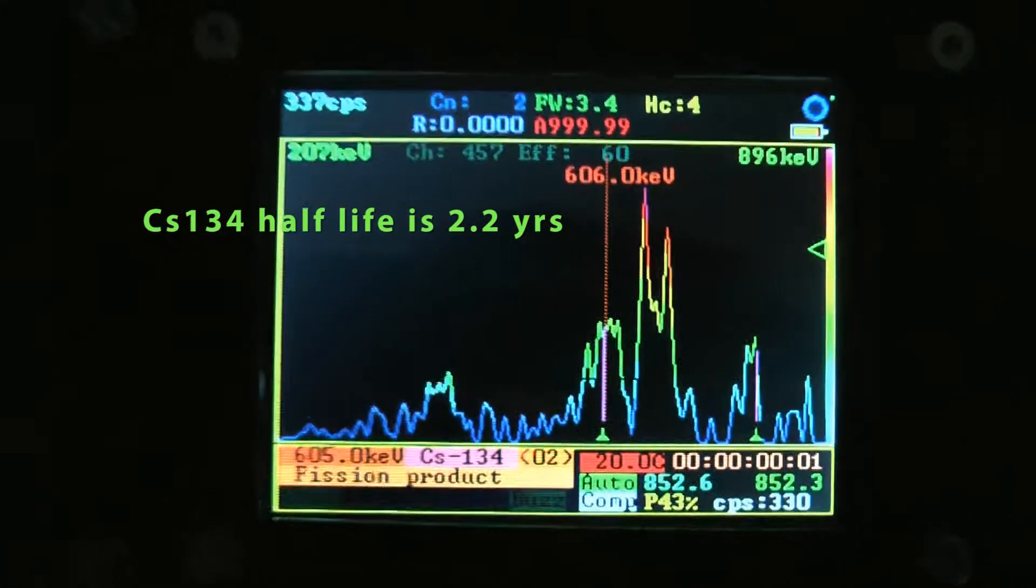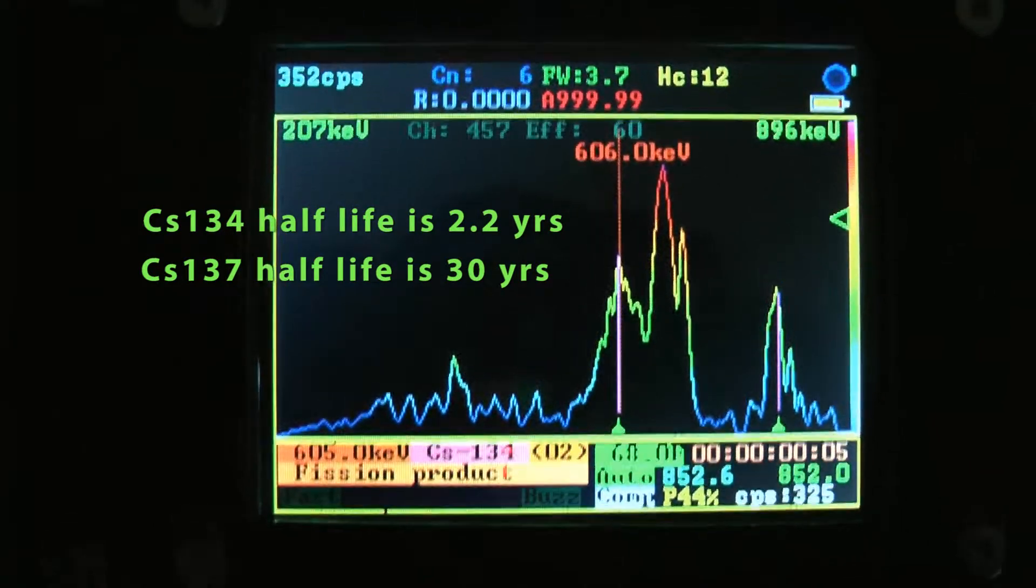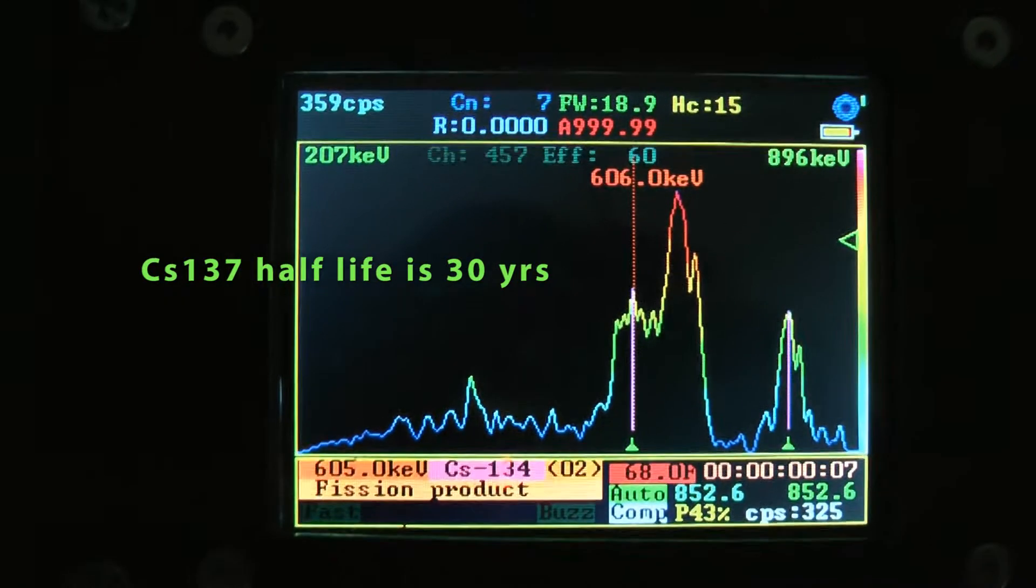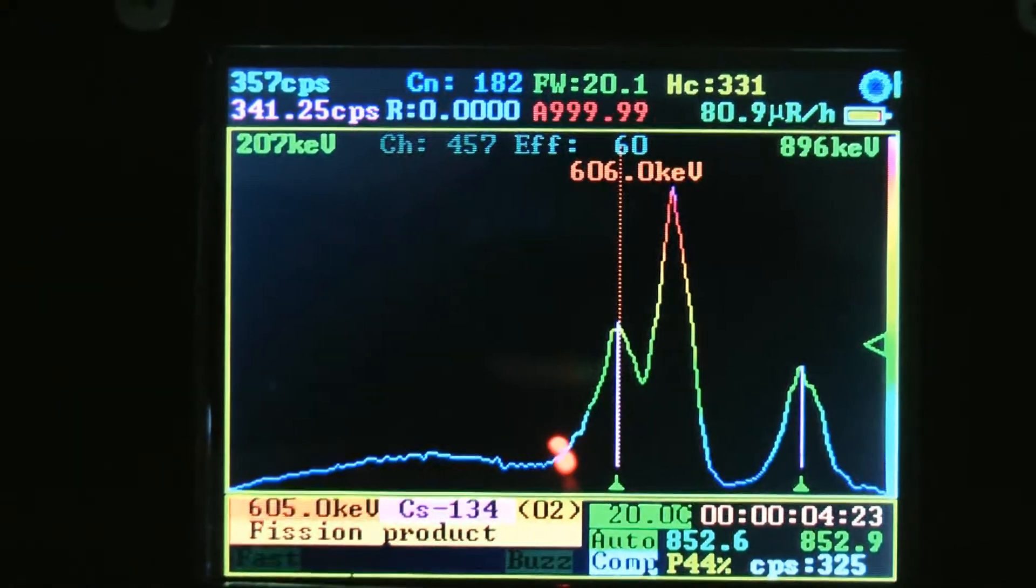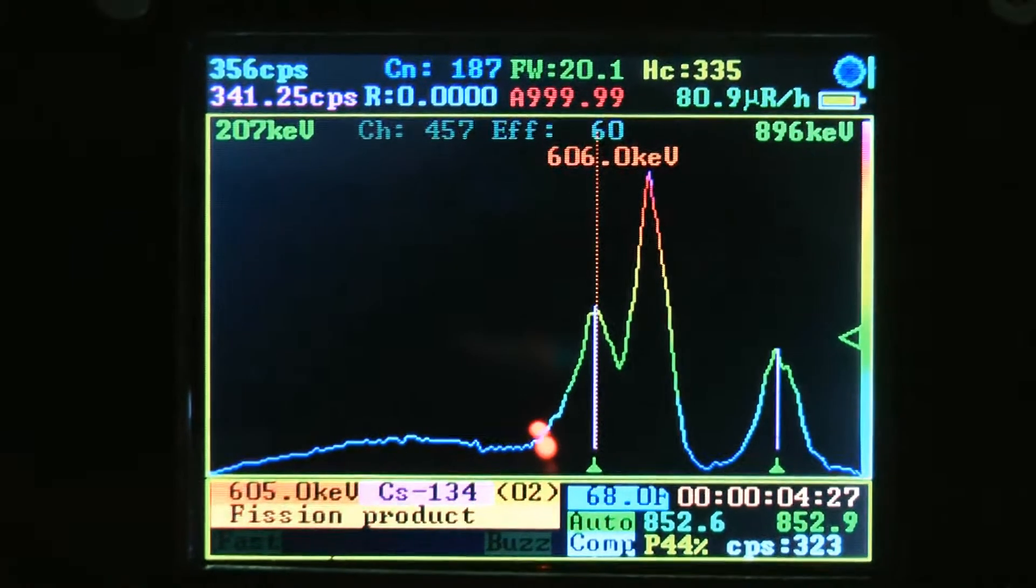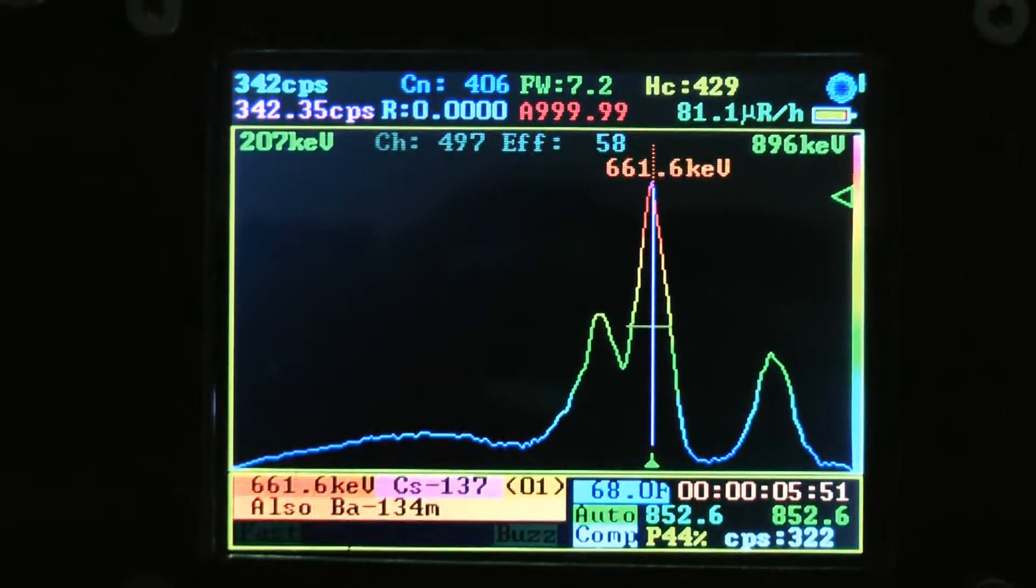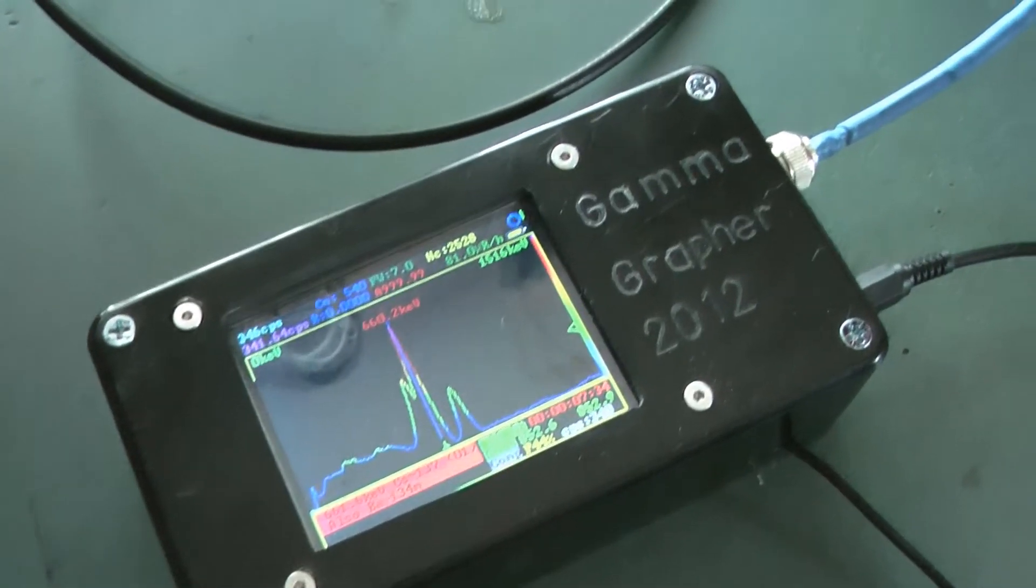There is a large difference in half-life between the two Caesium isotopes. And in the two and a half years since the Fukushima Daiichi disaster, more than 50% of the Caesium-134 has decayed. But the Caesium-137 will be present for many decades.